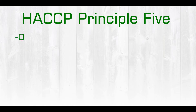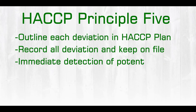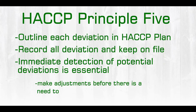For corrective actions, we need to outline each deviation in the HACCP plan, record all deviations and keep a record of those deviations on file, and then immediate detection of potential deviations is essential. That way, we can make adjustments before there is a need to reject the product or place the product on hold.